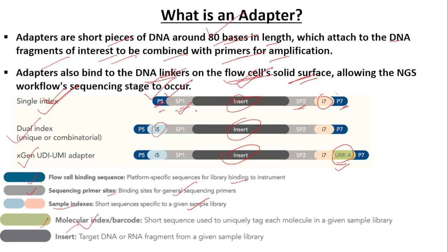So a sequencing adapter has different parts: the flow cell binding sequence, sequencing primer sites, sample indexes, and molecular indexes or barcodes. Molecular indexes or barcodes are short sequences used to uniquely tag each molecule in a given sample library. The insert is the target DNA or RNA fragment from a given sample library.